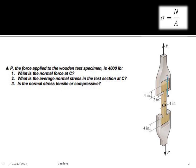So P is the force applied to the wooden test specimen, and it is 4,000 pounds. So here's P, and we need to find the normal force at C, which will then let us find the average normal stress, and we need to figure out if it's tensile or compressive.